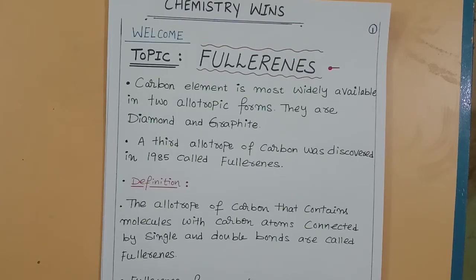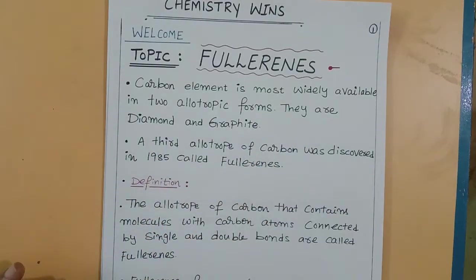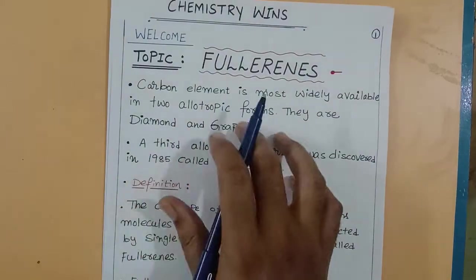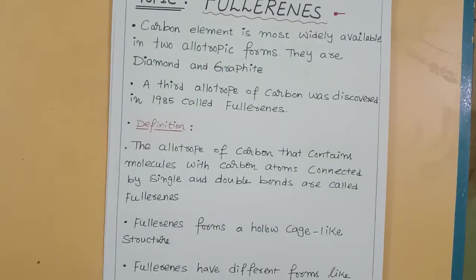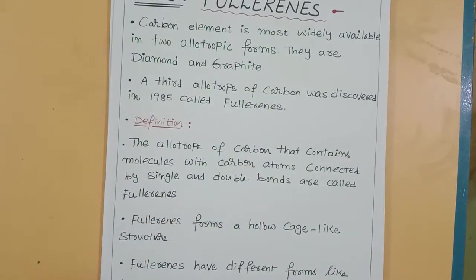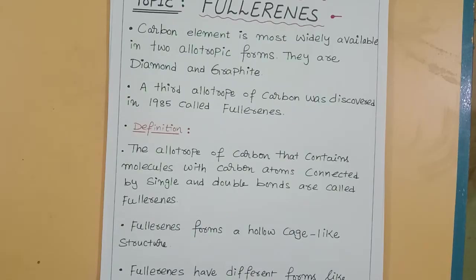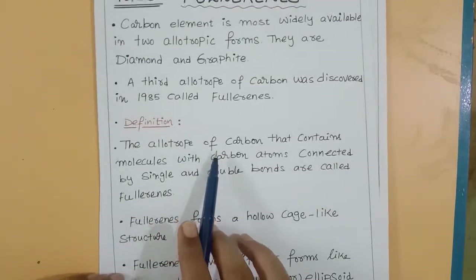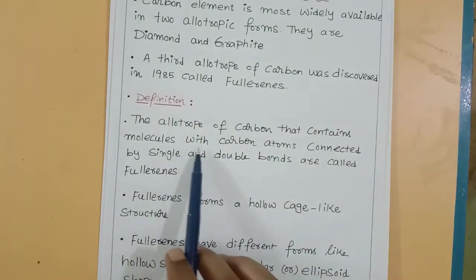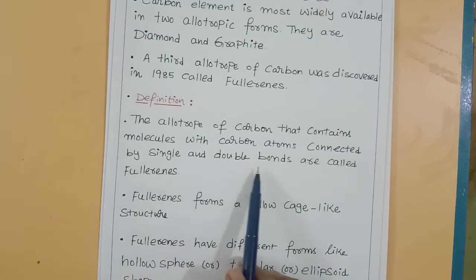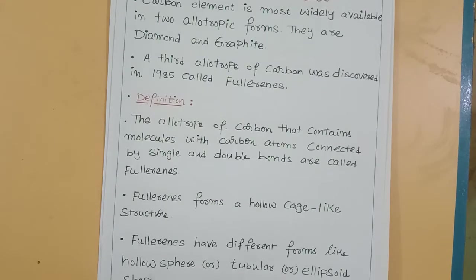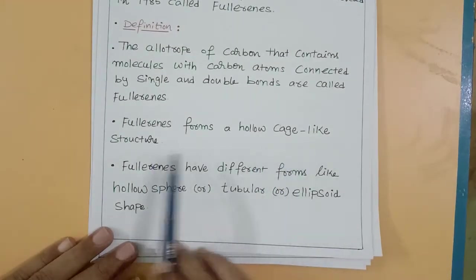Fullerenes are the allotropic forms of carbon. Carbon element is most widely available in two allotropic forms: diamond and graphite. But in the year 1985, a new type of carbon allotrope was identified. This new allotrope of carbon is called fullerene. Fullerene is the allotrope of carbon that contains molecules with carbon atoms connected by single and double bonds.